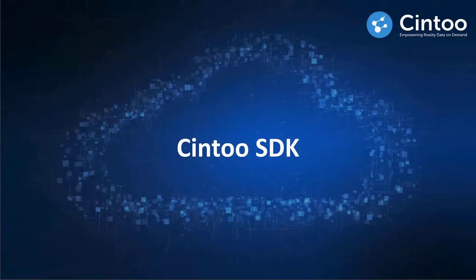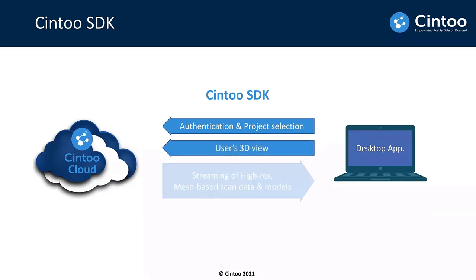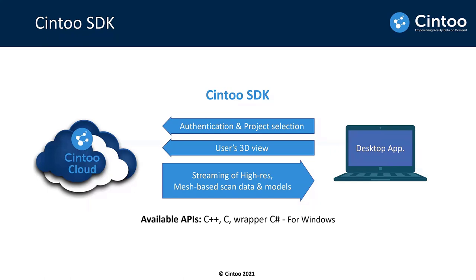What we have built to do this is the Sintu SDK. With the Sintu SDK, you can connect any desktop app — Unreal today, but also Unity or any modeling app — to Sintu Cloud. The SDK handles authentication, then you can select the project, work zone, and scan data. For every user's point of view moving in the desktop app, we stream the exact mesh information needed for that point of view in real time. The SDK is available now in beta as C++, C, or C# for Windows, optimized for scan-to-scan navigation.